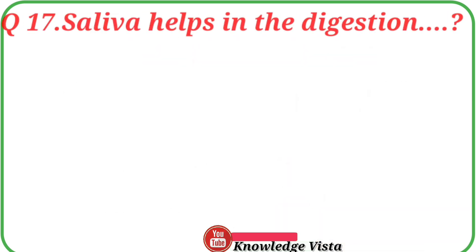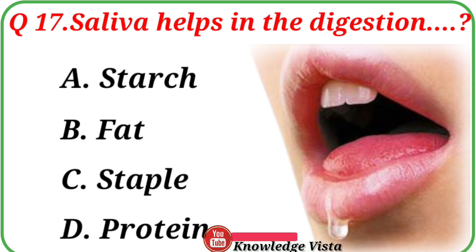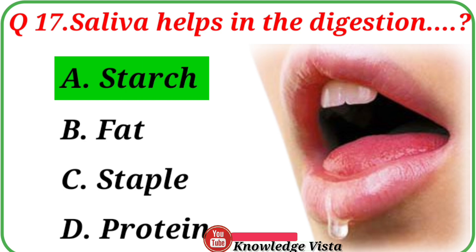Question No. 17: Saliva helps in the digestion of which substance? Your options are: A. Starch, B. Fat, C. Staple, D. Protein. Correct answer is Option A, Starch.